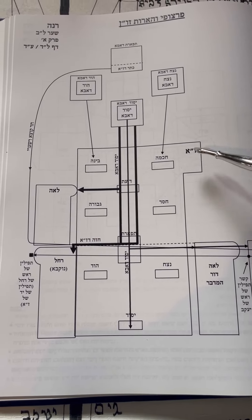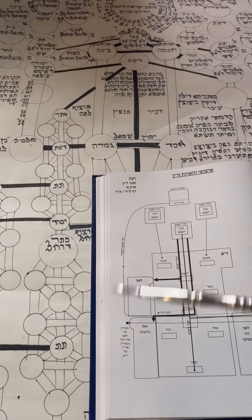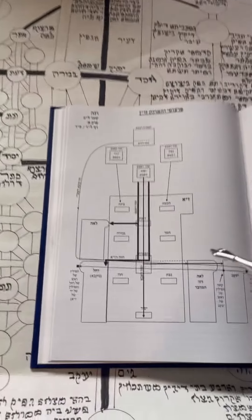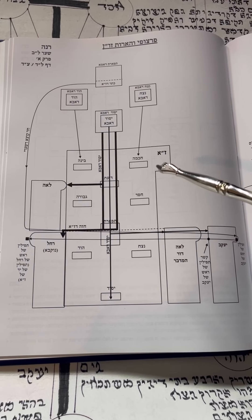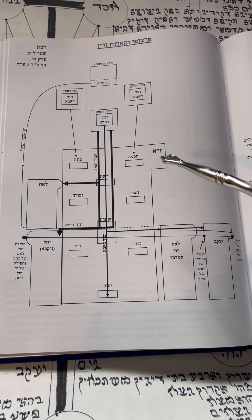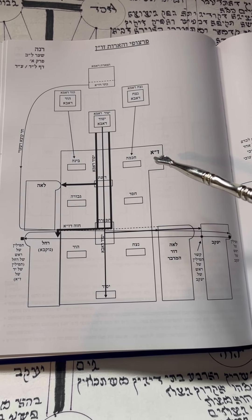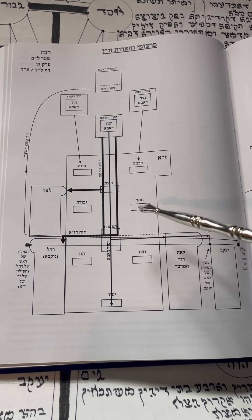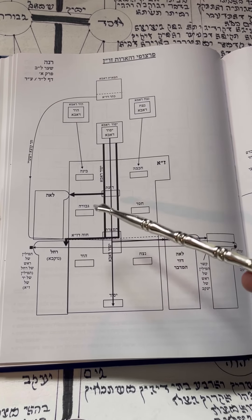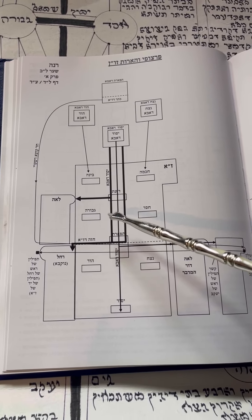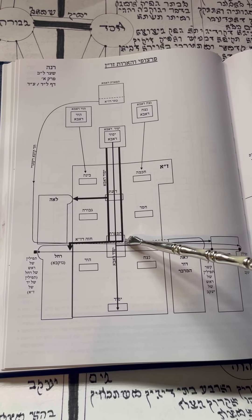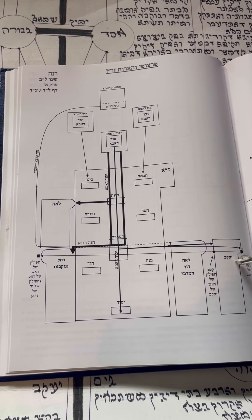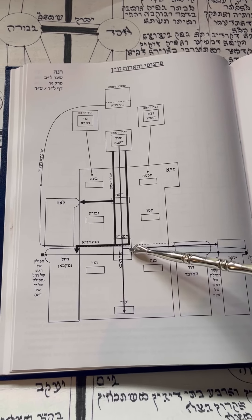This is the tree for the partsuf called Zer Anpin, and behind us on the scroll is the exact same thing. Zer Anpin is being constructed throughout the totality of Genesis. We see it being interacted with in Chesed, in terms of Abraham and his story, because it's written Chesed to Abraham. We see it in Gevurah and the secret of Yitzhak. And Tiferet is the secret of Yaakov. We're interacting at the points of the story of Yaakov, and he personifies the Sefirah of Tiferet.